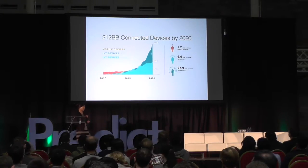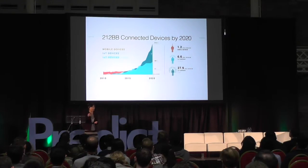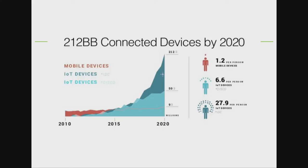As you can see from the previous picture, the number of devices has dramatically increased. Here is the specific figure. By 2020, according to Cisco's analysis, each person is going to have 6.6 devices. And according to IDC, the number is even bigger — almost 28 devices associated to one person. This can be easily predicted because imagine 10 years ago, how many devices you had that could connect to the Internet compared to how many you have now. This is going to be the trend for the next few years as well.